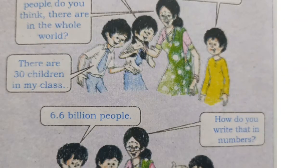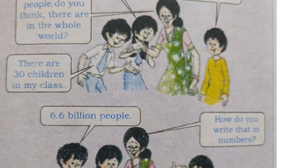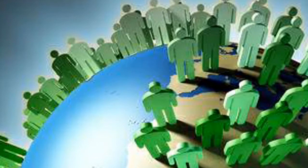The boy answers: 6.6 billion people. The lady asks how you write that in numbers. From this comic figure, we learn that people are scattered in different numbers — 1000 in a village, 500 in a school, and 6.6 billion in the whole world. But by 2020 the population is 7.8 billion, which is 780 crores or 78,000 lakhs — the current world population.